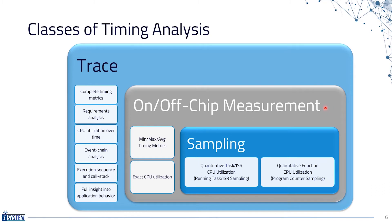The third approach is based on trace. As this figure indicates, trace-based timing analysis provides the maximum of information and thus also the maximum of analysis options. It also includes all the analysis options offered by the other two classes — measurement and sampling. The unique thing about trace is that it allows an exact reconstruction of sequences of various events over time, from which you can derive a complete set of timing metrics, analyze CPU load over time, analyze event chains and function call sequences — basically providing a full insight into the software execution.